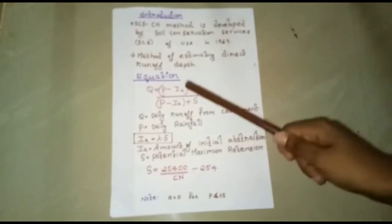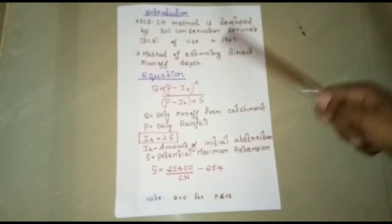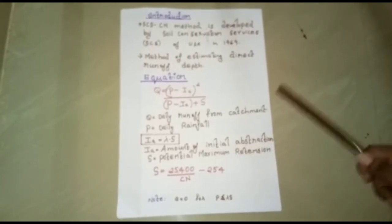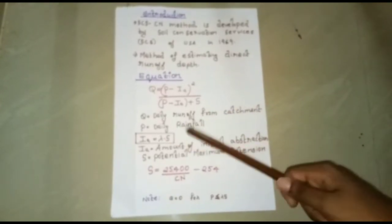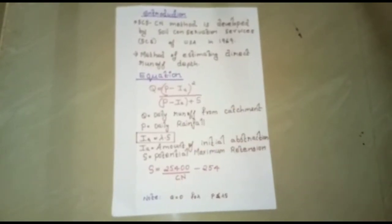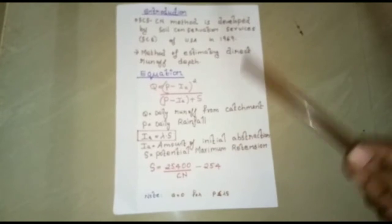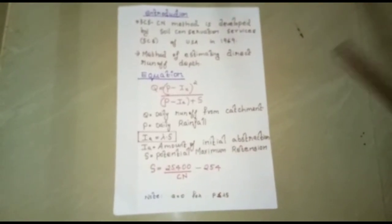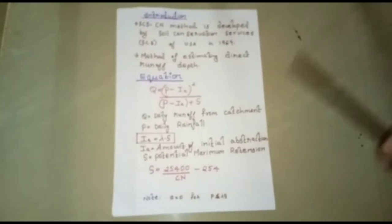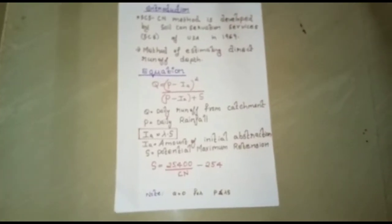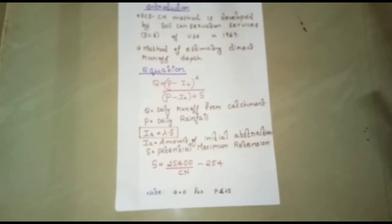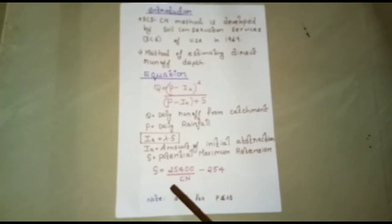The main equation is: Q equals P minus IA, the whole squared, divided by P minus IA plus S. Here Q is the daily runoff from the catchment, P is the daily rainfall, and IA equals lambda into S.